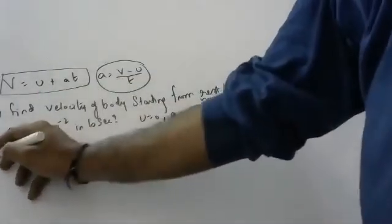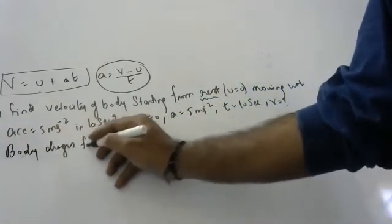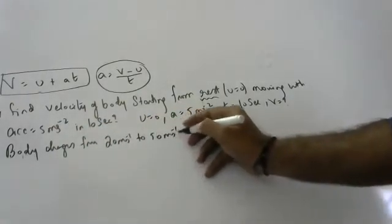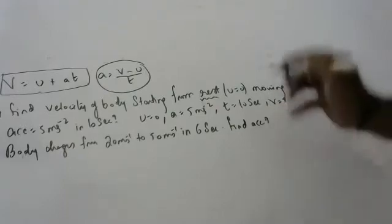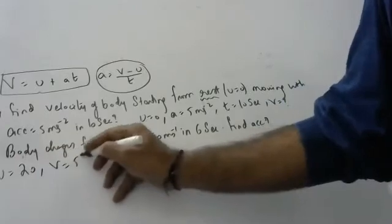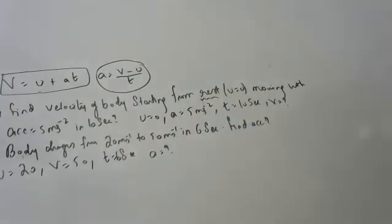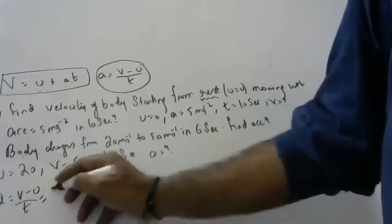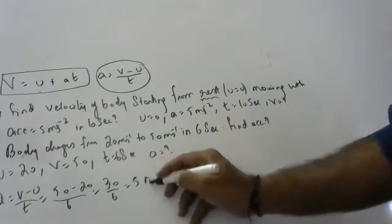Next problem: a body changes from 20 meters per second to 50 meters per second in 6 seconds. Find the acceleration. Acceleration equals V minus U divided by T, which is 50 minus 20 divided by 6, giving 30 divided by 6 equals 5 meters per second squared.